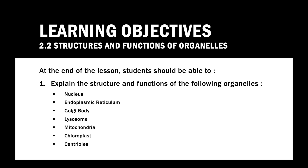These are the learning objectives that you need to achieve at the end of the lesson. Students should be able to explain the structure and functions of the following organelles: Nucleus, Endoplasmic Reticulum, Golgi Body, Lysosome, Mitochondria, Chloroplasts, and Centrioles.